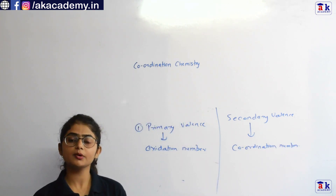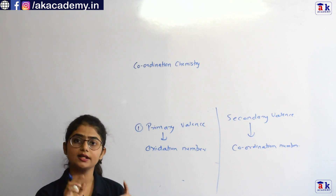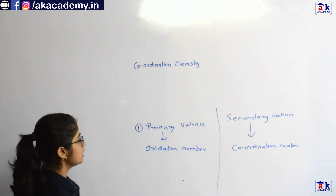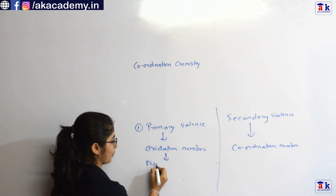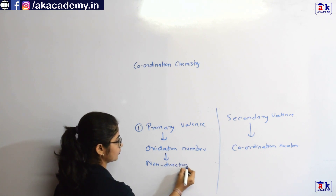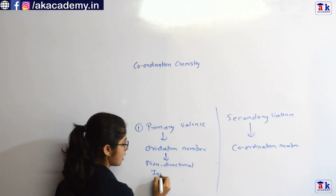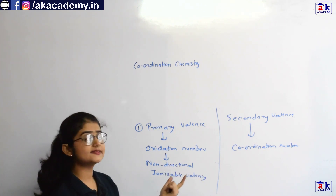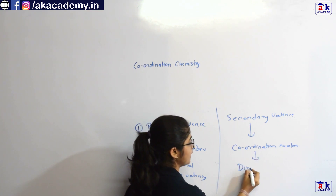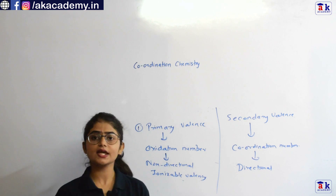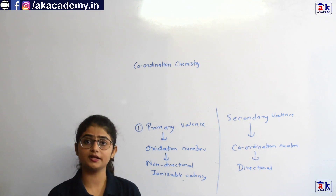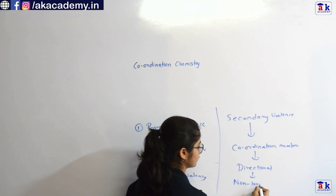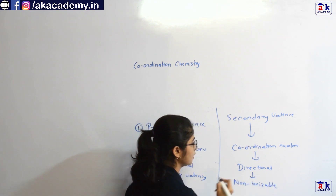What is coordination number? It is the number of ligands surrounding the metal that are enclosed within the coordination sphere. The primary valency is non-directional — it is an ionizable valency. The secondary valency is directional; it decides the geometry of a given coordination compound, but it is non-ionizable. Remember these facts.